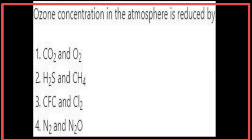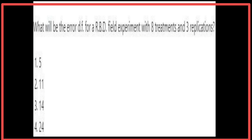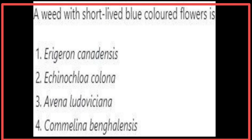Ozone concentration in the atmosphere is reduced by chlorofluorocarbons and chlorine. The science that deals with aspects of hydrology having direct relevance to agriculture is called agrometeorology. For an RBD field experiment with 8 treatments and 3 replications, the error degrees of freedom is 14, using the formula (r−1)(t−1). A weed with short-lived blue colored flowers is Commelina benghalensis.